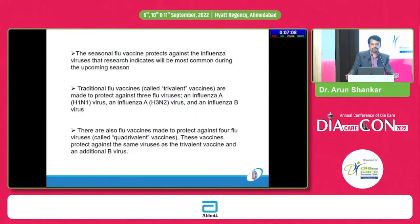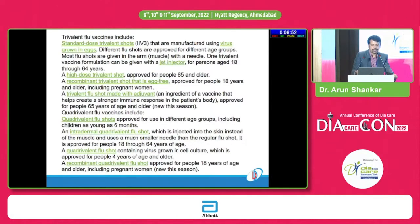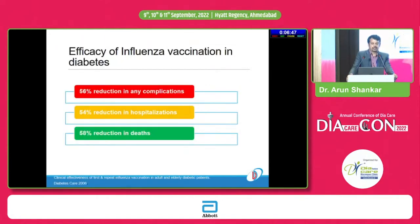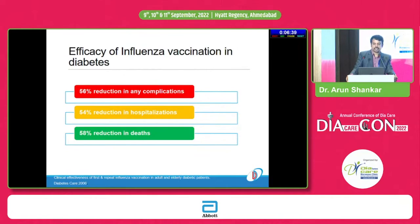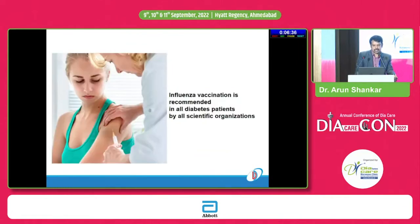We have two commonly used influenza vaccines: the traditional trivalent flu vaccine and the quadrivalent vaccine, which covers four different strains. These are seasonal vaccines that must be updated every year. Data has shown that after influenza vaccination, there is a 56% reduction in influenza-related complications, a 54% reduction in hospitalization, and a reduction in deaths as well.